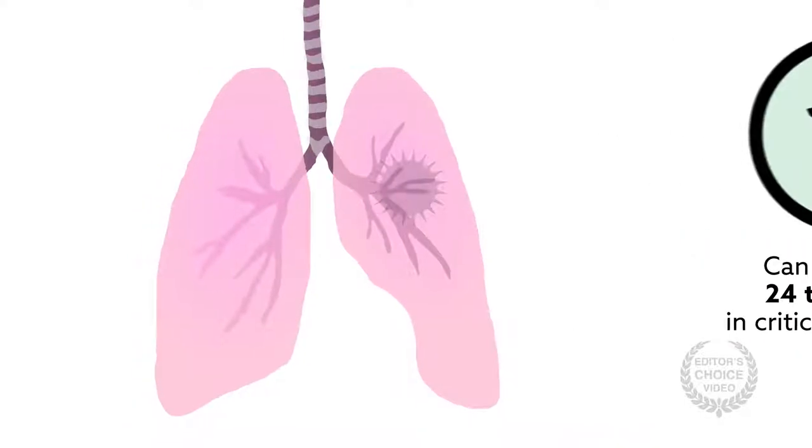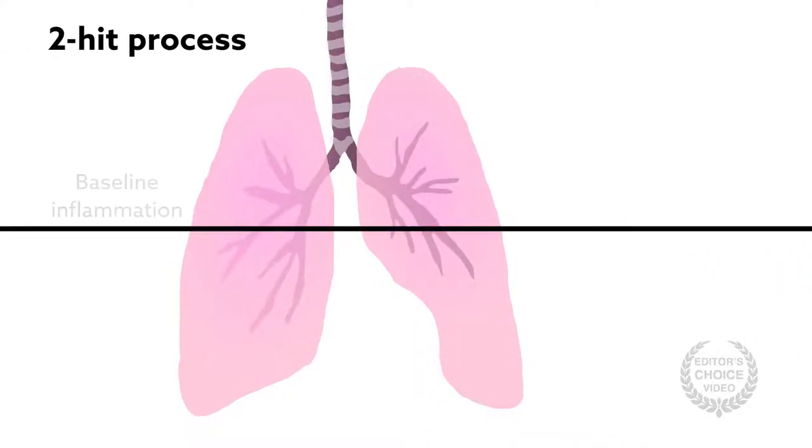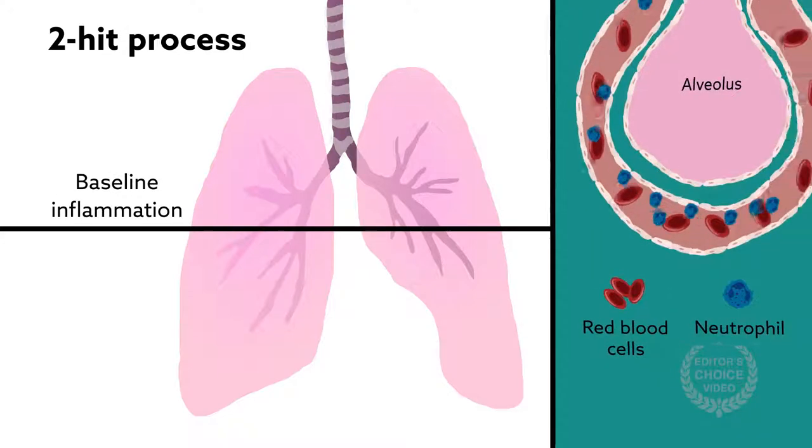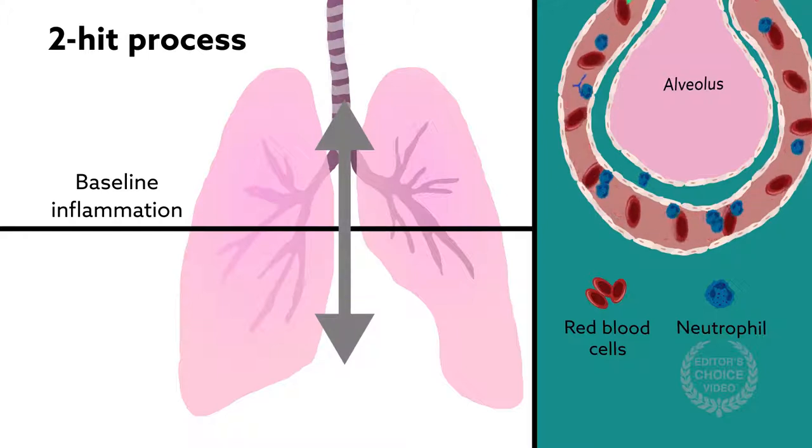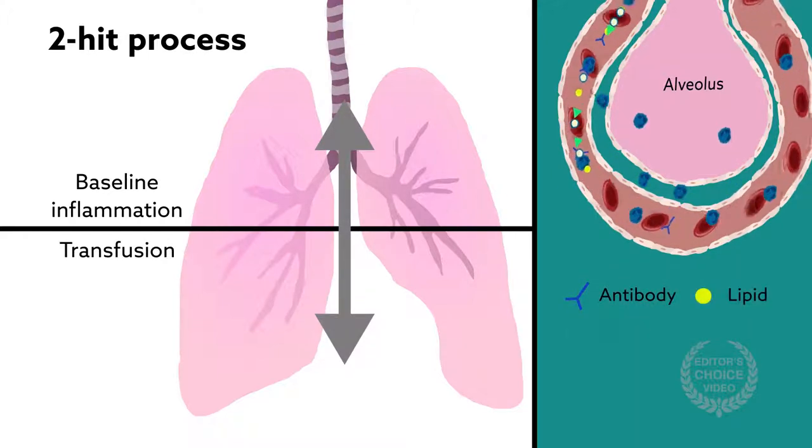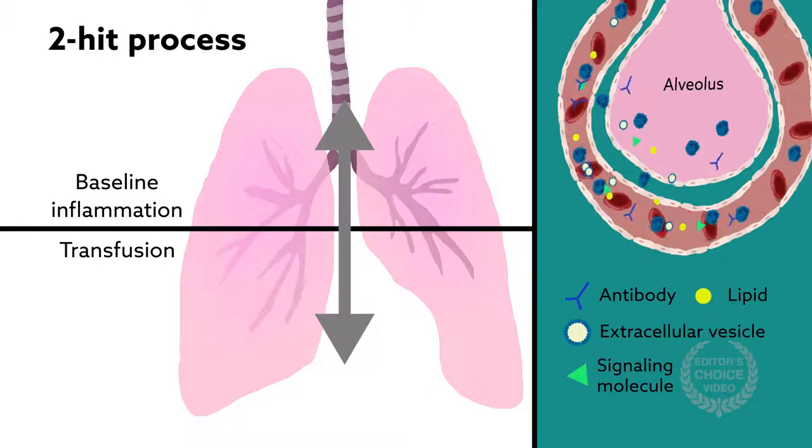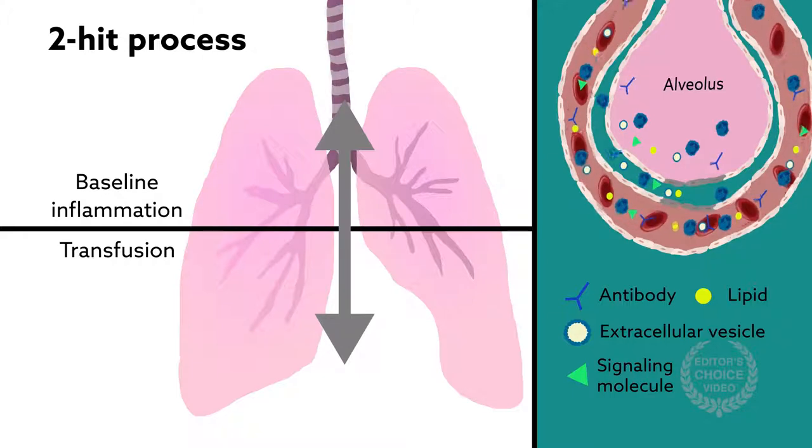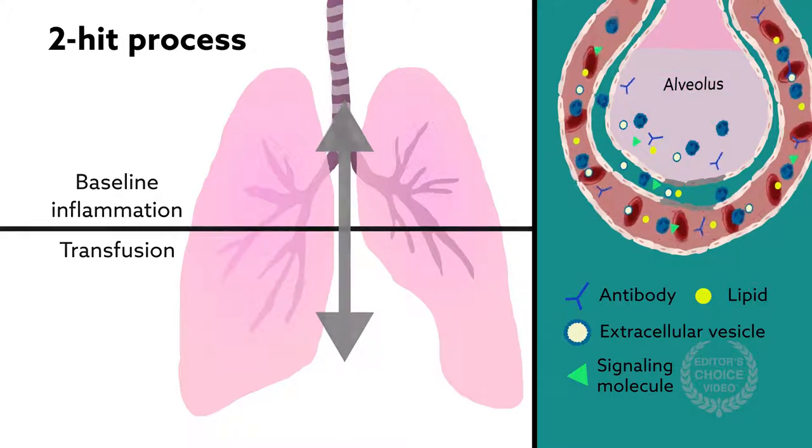TRALI is not fully understood, but is frequently described as a two-hit process. Baseline inflammation within the recipient establishes increased risk, in part due to neutrophils in the lungs. A full-blown injury occurs only after a transfusion, when antibodies or lipids, extracellular vesicles, or signaling molecules activate neutrophils and damage the lining of blood vessels and lung tissues, causing pulmonary edema and respiratory distress.